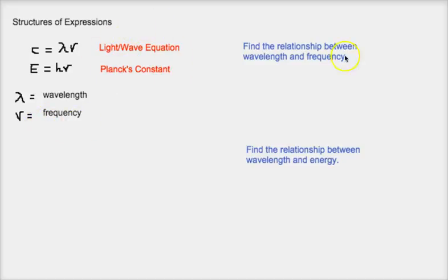So let's take these two equations and implement them into math. Find the relationship between wavelength, which is lambda, and frequency, nu. So we can do that by finding if it's directly proportional or inversely proportional. We can do that by rearranging them. We could also plug in the frequency into this formula. But first of all, you want to write it out.